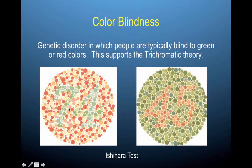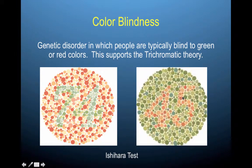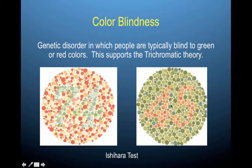This makes a 74, and if you do have colorblindness you might only see a 71. And then this is a 45 right here. People that are low on a particular cone or missing a particular pigmented cone won't be able to see these numbers through distinctions in color.